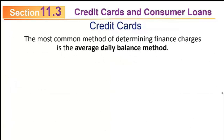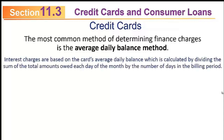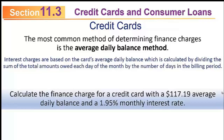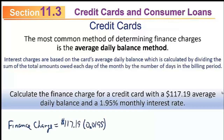The most common method of determining finance charges is the average daily balance method. Interest charges are based on the credit card's average daily balance, calculated by dividing the sum of the total amounts owed each day of the month by the number of days in the billing period. For example, to calculate the finance charge for a credit card with a $117.19 average daily balance and a 1.95% monthly interest rate, multiply $117.19 times 0.0195, which gives a $2.29 finance charge.